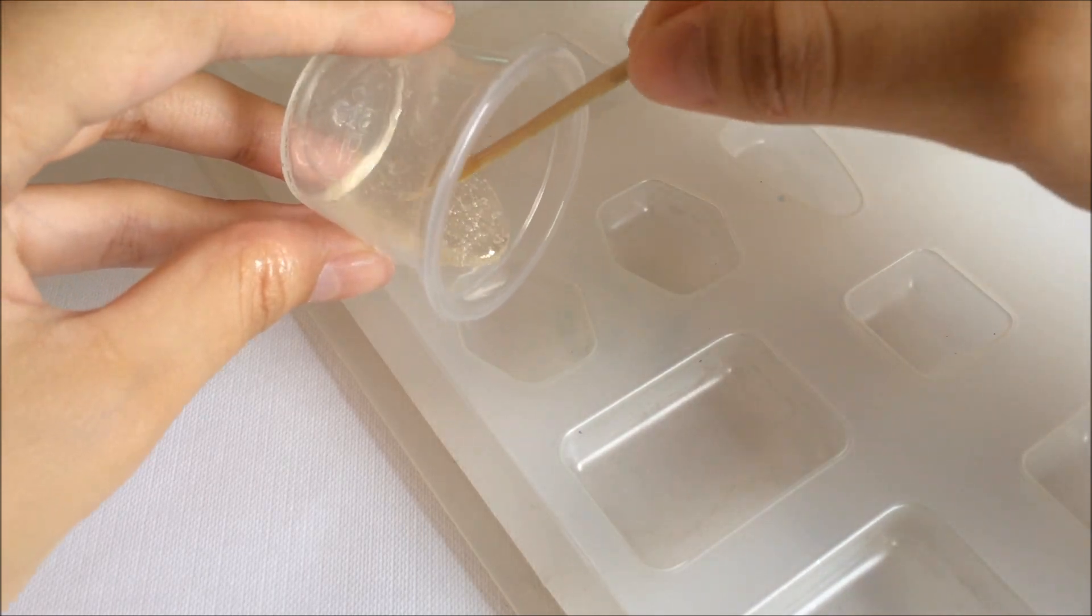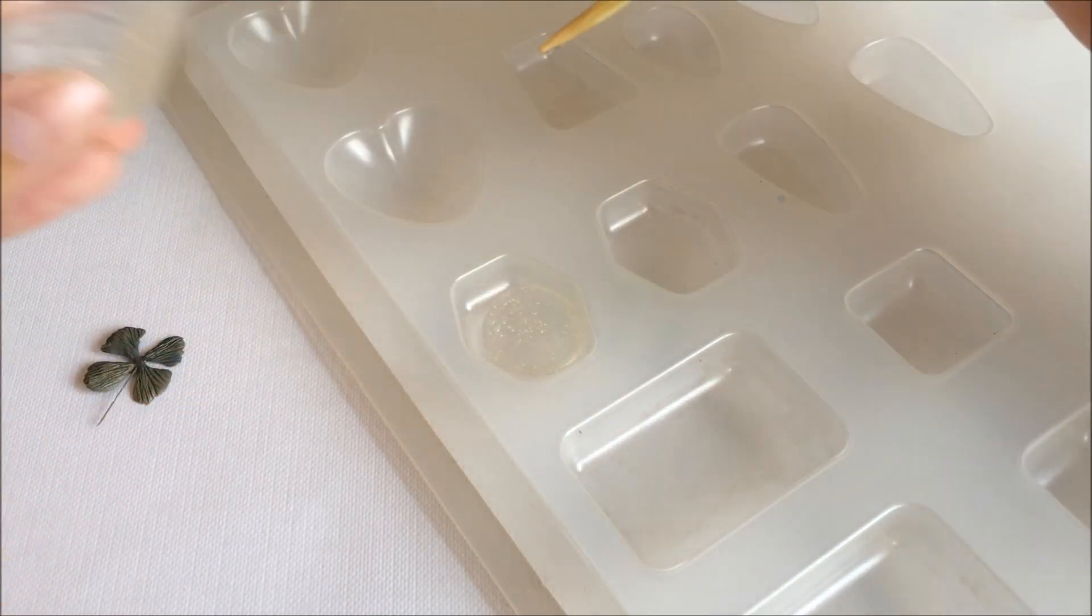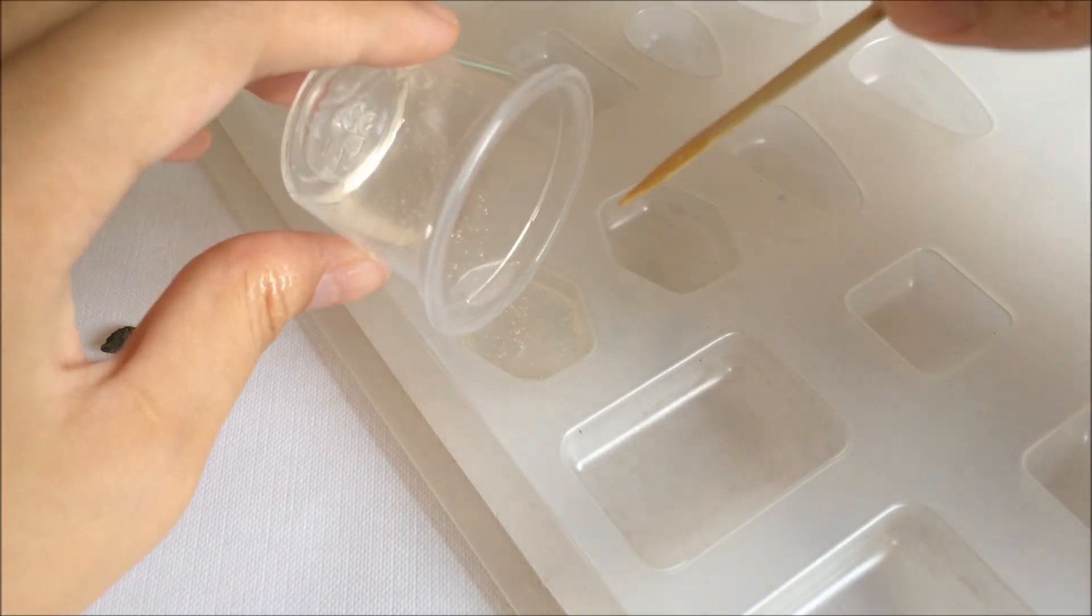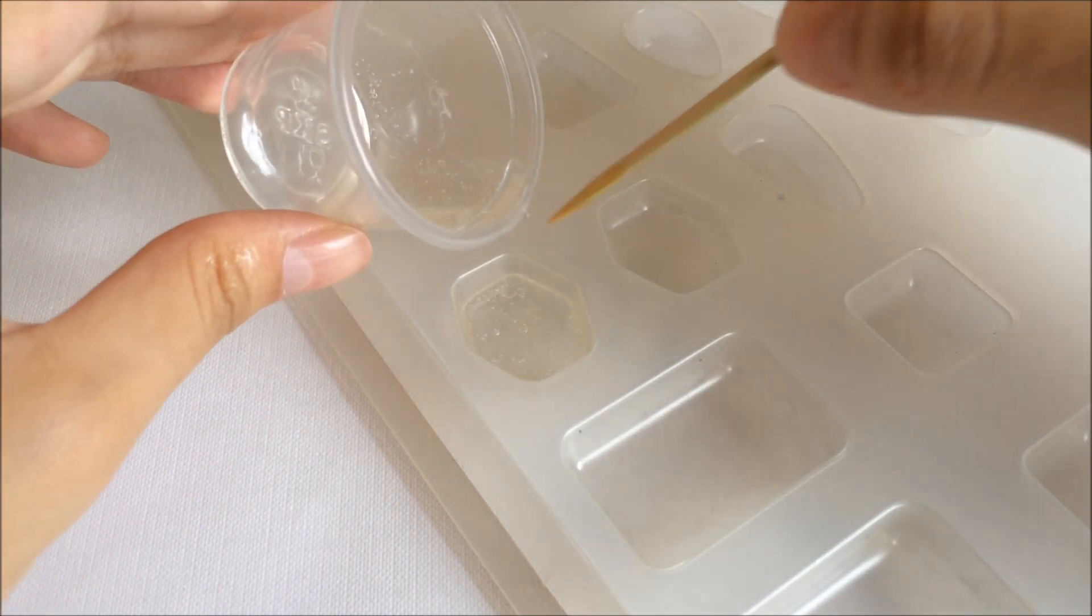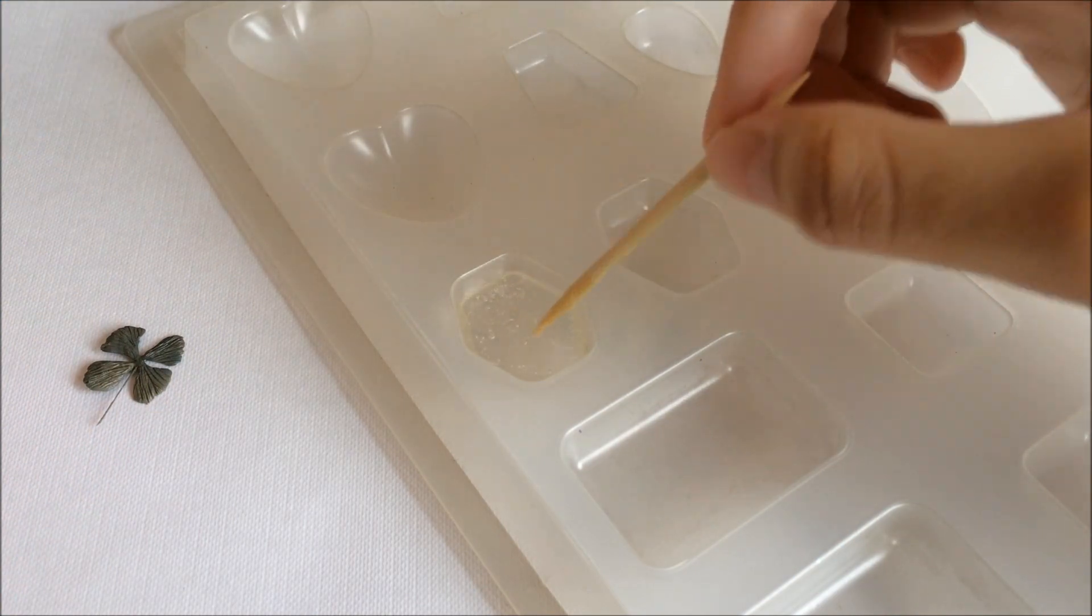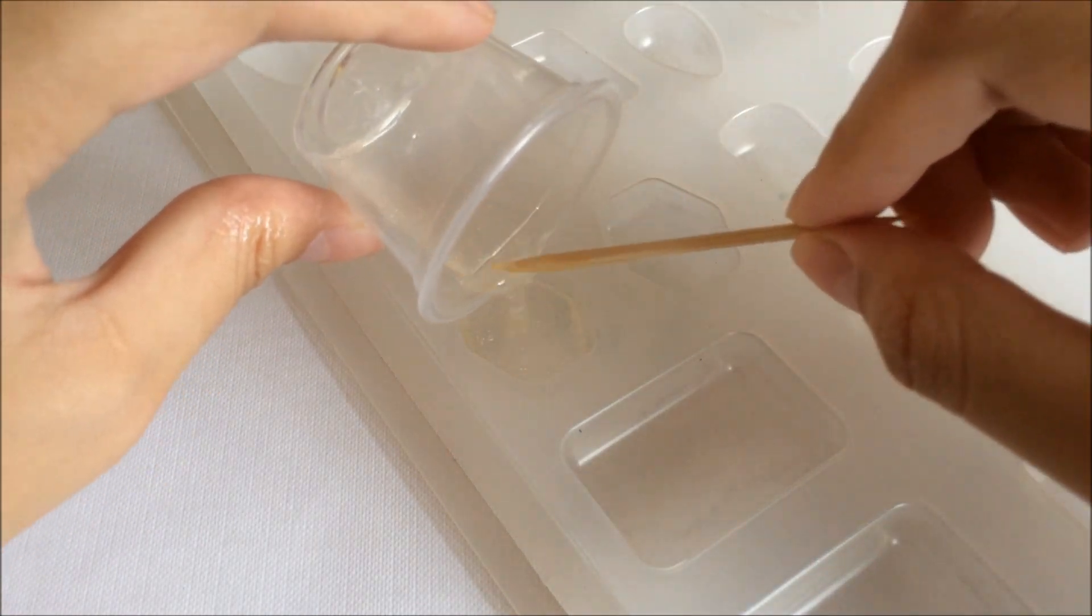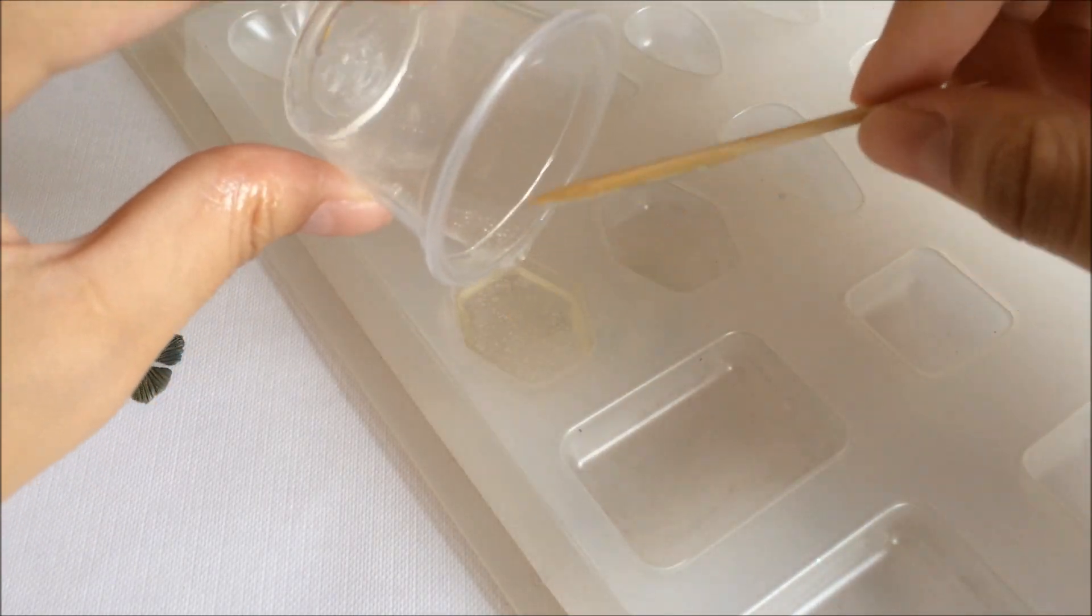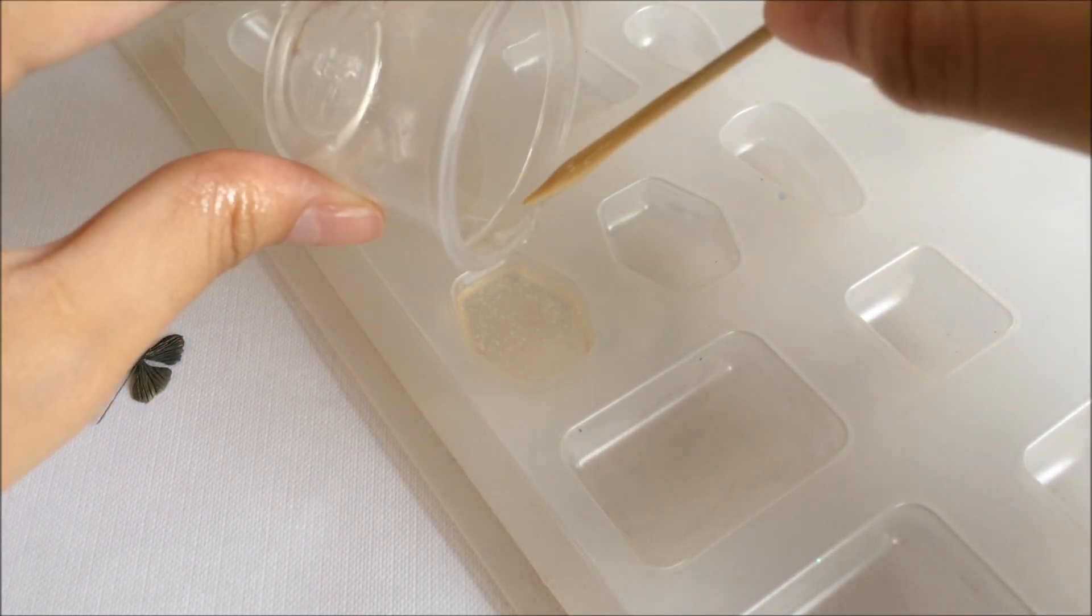Grab a mold and get your resin mixed and pour them into your mold. You want them to be half-filled or a little lower than half. After you're done, grab a straw and gently blow into the resin to get rid of any air bubbles.